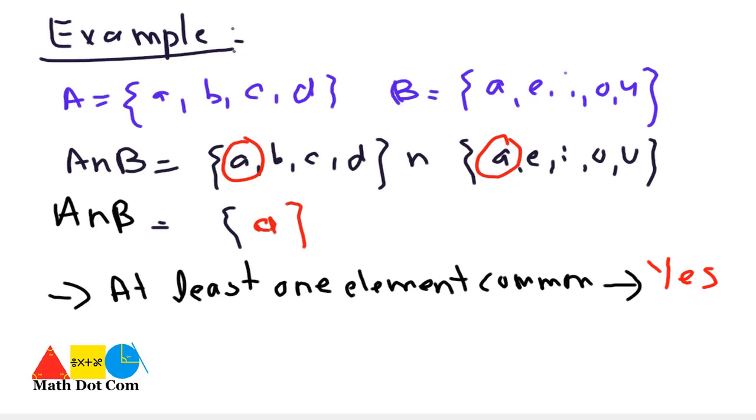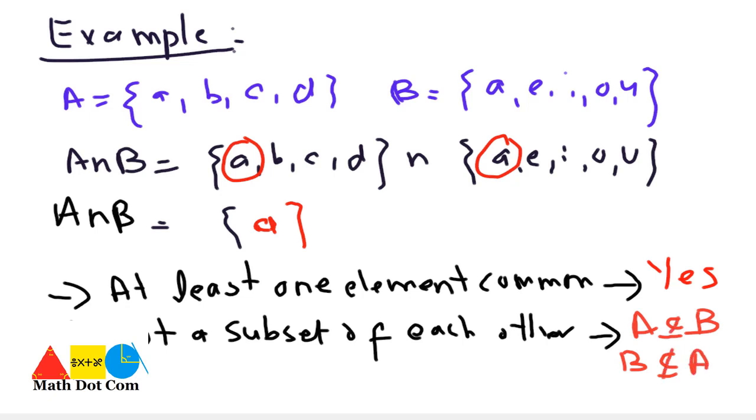Second condition is they must not be the subset of each other. Is it satisfying the condition? Yes, it is satisfying because A is not the subset of B and B is also not the subset of A. So both conditions are met, it means that A and B are the overlapping sets.